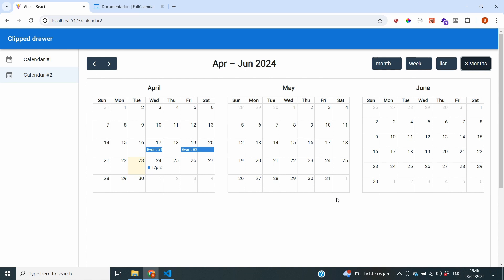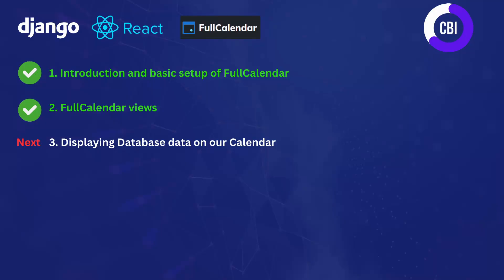That's actually all for this video. In the next video, we're going to continue and pass some data from our Django backend to our React.js front end and actually use that inside of our calendar. I hope you've enjoyed this video — if you have, please leave a like and subscribe. I hope to see you in the next one. Bye bye.